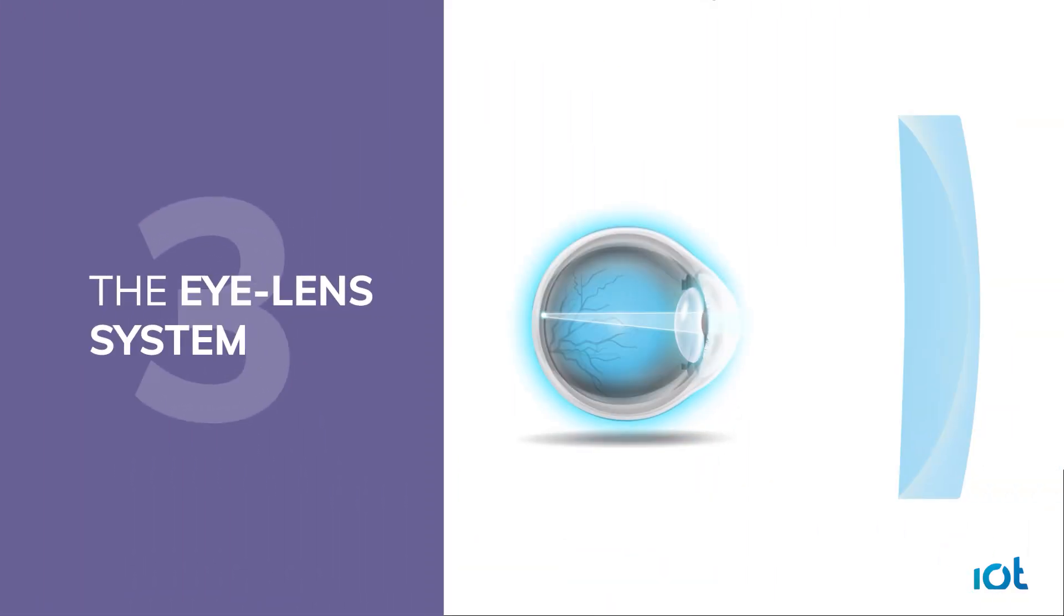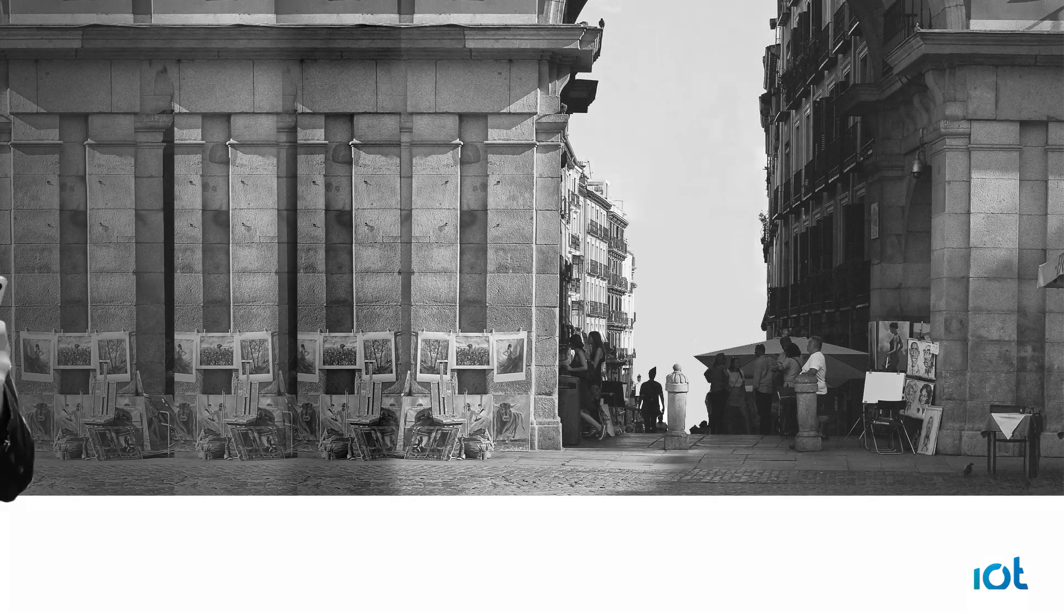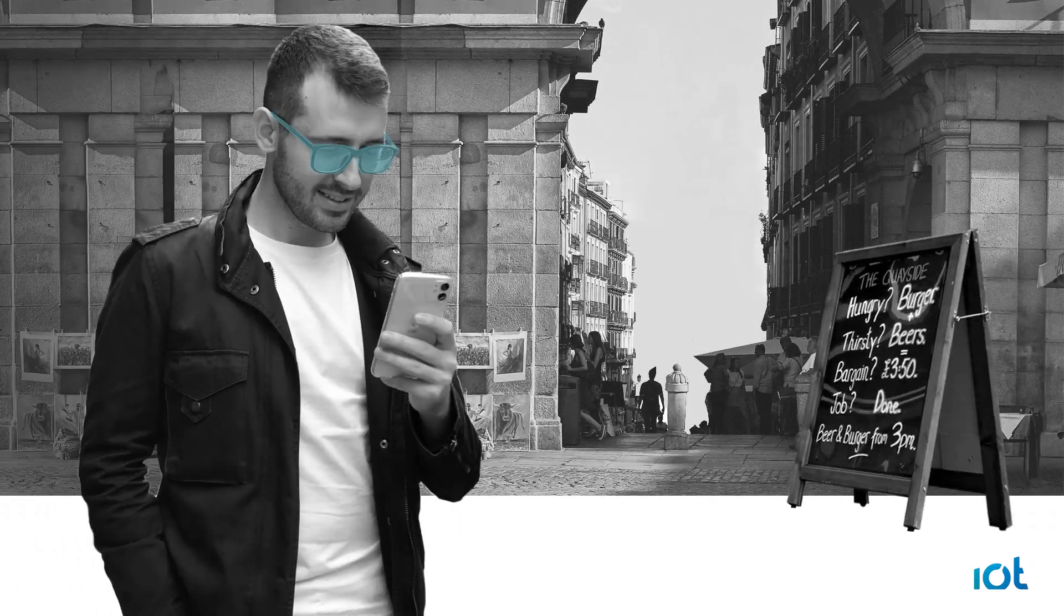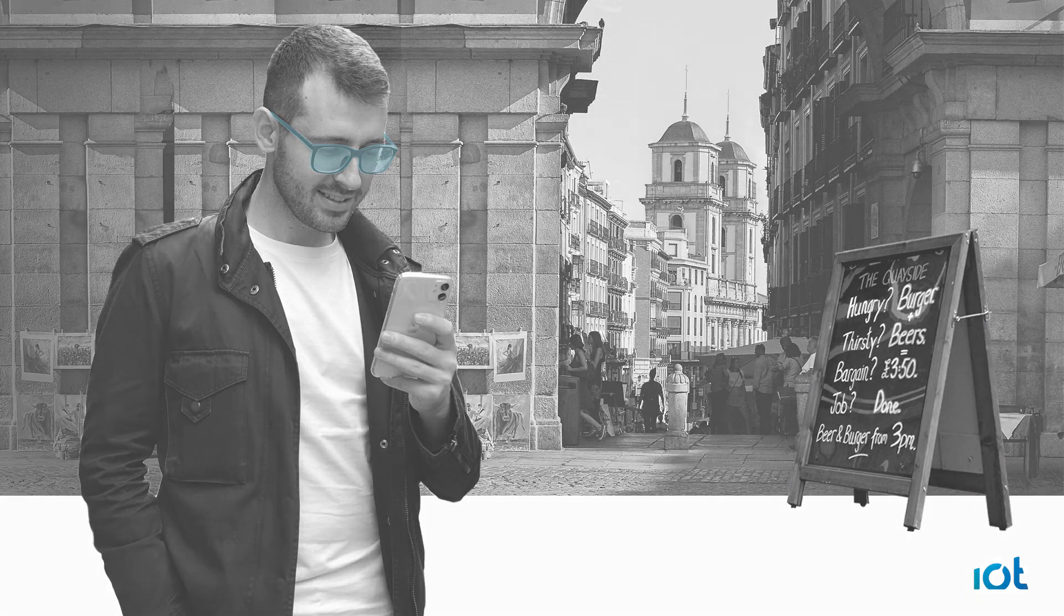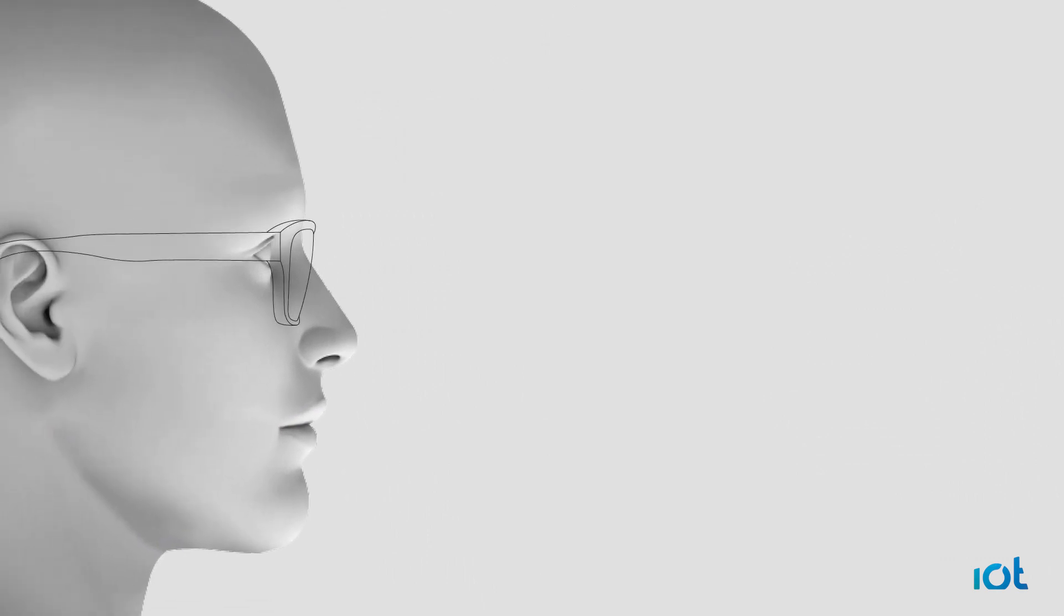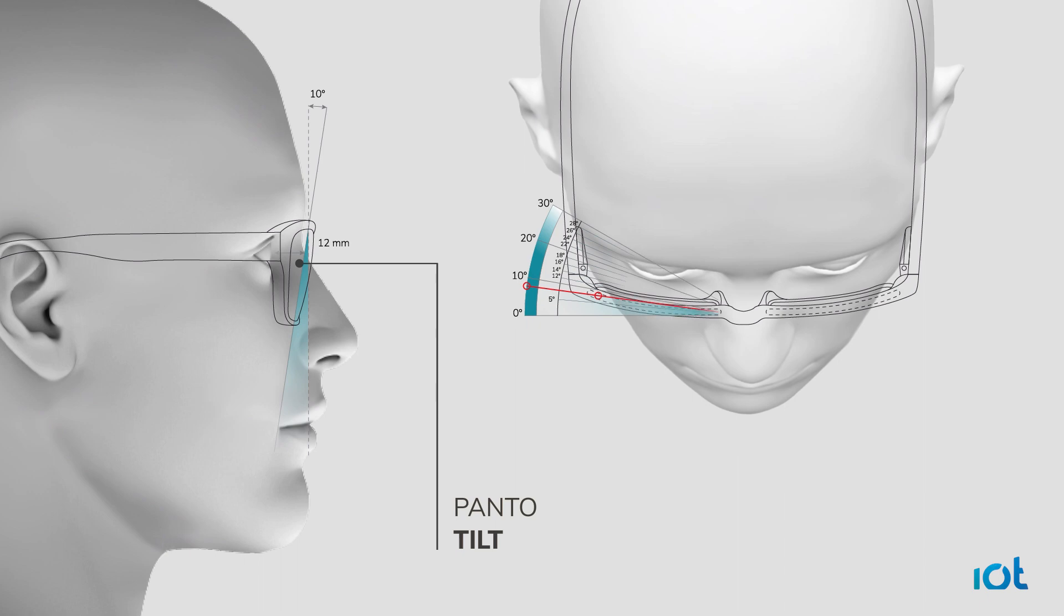The eye lens system represents what happens in real life when a patient is wearing a pair of glasses. All frames have pantoscopic tilt and wrap angle. Eyes and lenses are not perpendicular, even in the central vision.